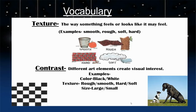Our next vocabulary word is contrast — different art elements create visual interest. For example, the art element of color. Let's look at the image on the bottom left corner and notice the contrast between the colors black and white. I'm sure you've just made a connection with a checkerboard. Earlier we discussed texture as an art element, but in art, if you have contrasts of texture — you include both rough and smooth textures, hard and soft textures — you create visual interest.